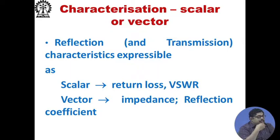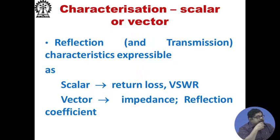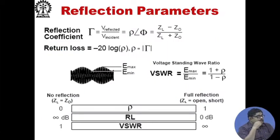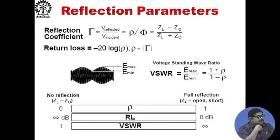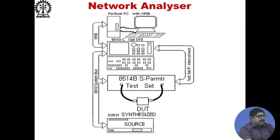Scalar characterization examples are return loss and VSWR — both scalar quantities. Vector characterization examples include impedance, because impedance is a complex quantity, and reflection coefficient, which is also complex and has both magnitude and phase. Return loss is defined as minus 20 log rho, and transmission is characterized by insertion loss and gain.